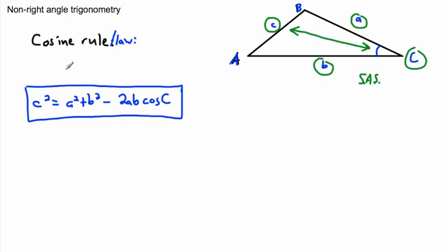So this version tells you: if you want to find side c, you need its opposite angle and the two neighboring sides. In practice, I always try sine law first because it's easier, and if that doesn't work, then I try cosine law.